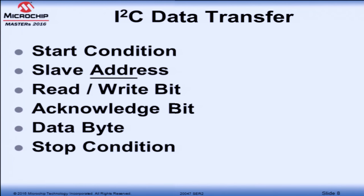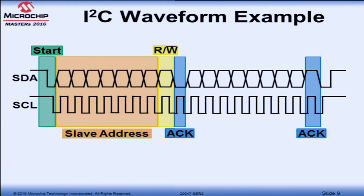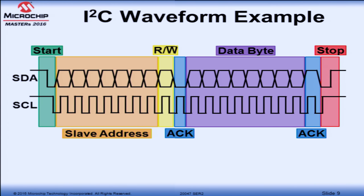Here's an example of an I2C waveform. At first look it's not that interesting, but once we dissect it into sections it becomes more interesting. We'll have the start condition, followed by the slave address, the read-write bit, the acknowledge bits, data byte, and the stop condition. We'll go through them one by one.